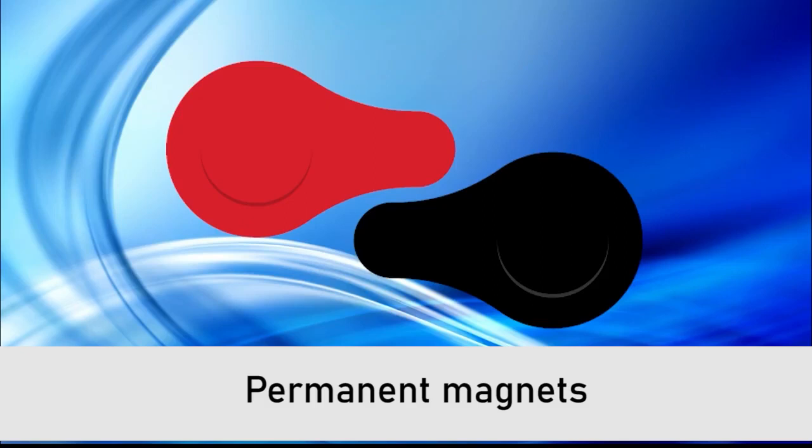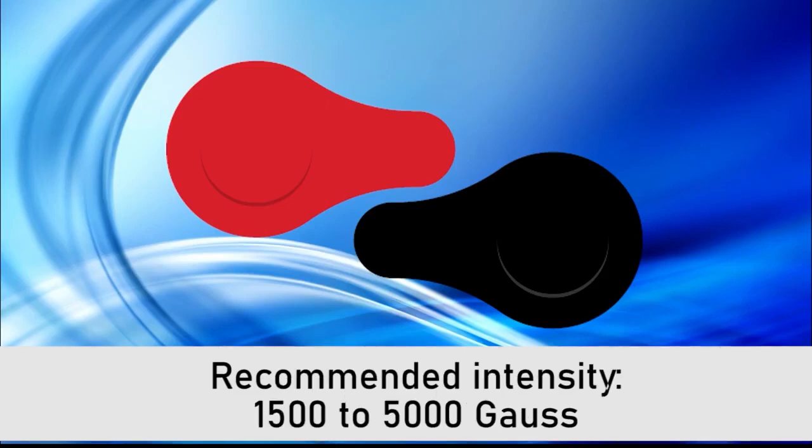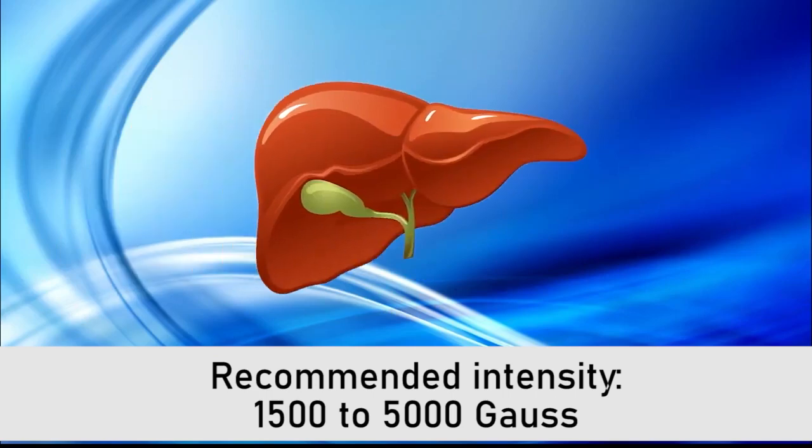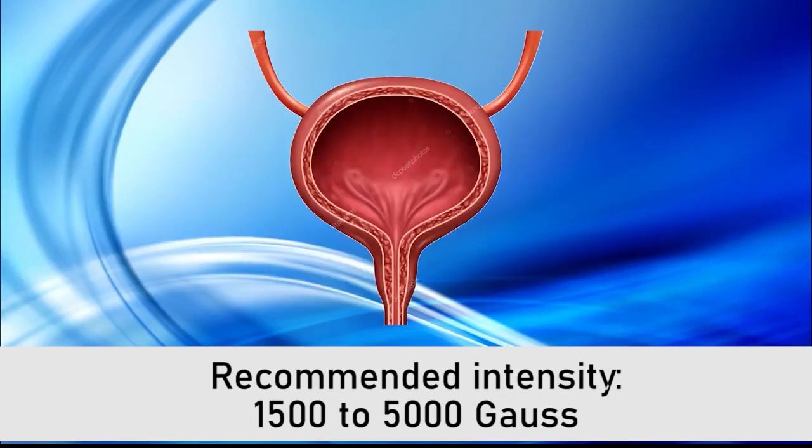The recommended intensity is 1500 to 5000 Gauss. Below 1500 Gauss can be insufficient when impacting very deep organs such as the liver, pancreas, or bladder, for example, and may not depolarize and balance the energy of those organs.